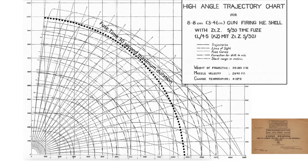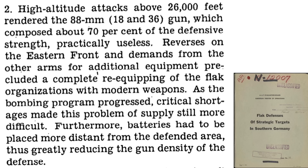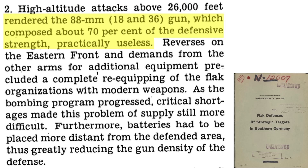The projectile's fuse time can be set between 2 and 30 seconds — it cannot be set below 2 seconds for safety. Another 88mm flak gun limitation, listed in a 1943 Military Intelligence Service document titled Tactical Trends, is a ceiling height of around 26,000 feet. The 88mm caliber flak gun struggles to engage targets at altitudes greater than 26,000 feet. High altitude 88mm flak engagements above 26,000 feet were not effective.